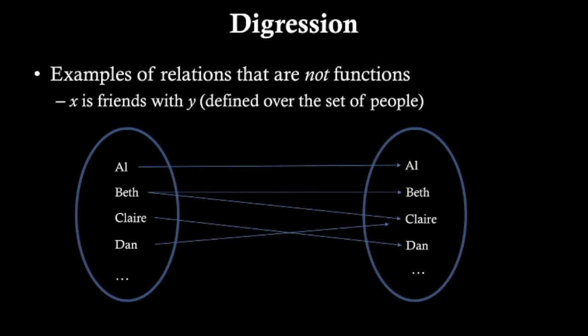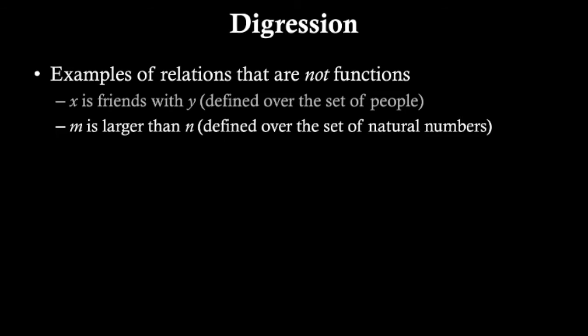For instance, X is friends with Y, defined over the set of people. There are people that have more than one friend. Beth is friends both with herself and with Claire, so that's not a function. Also, the relation M is larger than N, defined over the set of natural numbers, is not a function either, because 6 is larger than 5, but also larger than 4, 3, 2, etc.